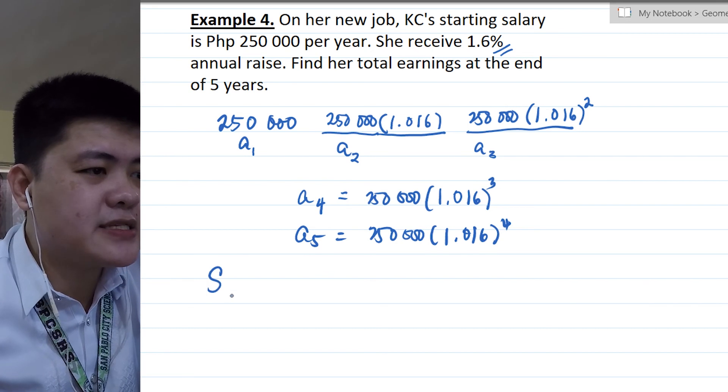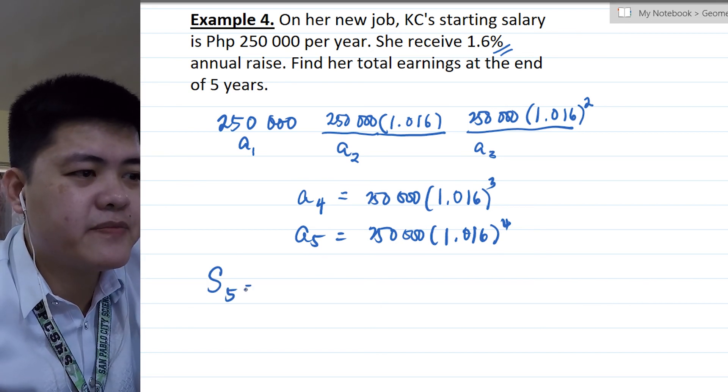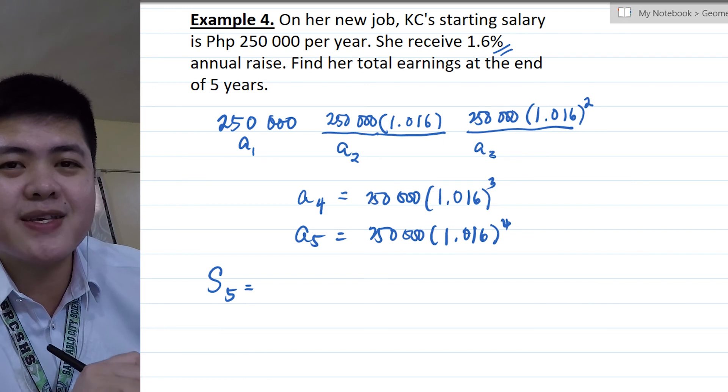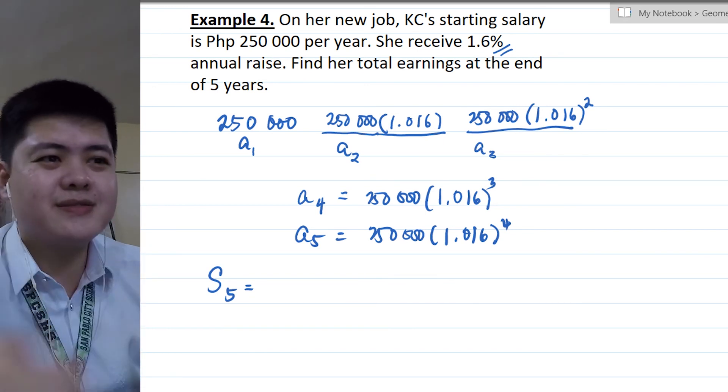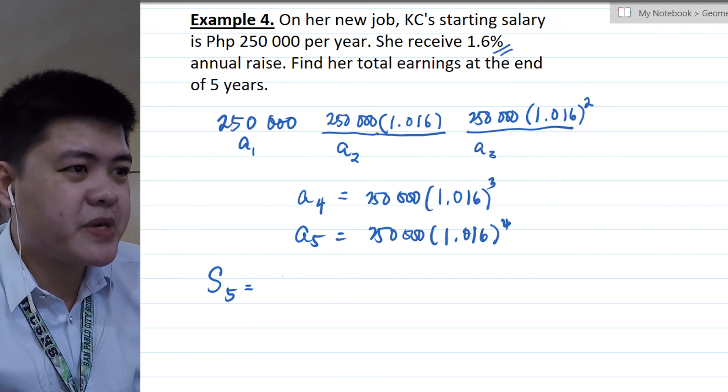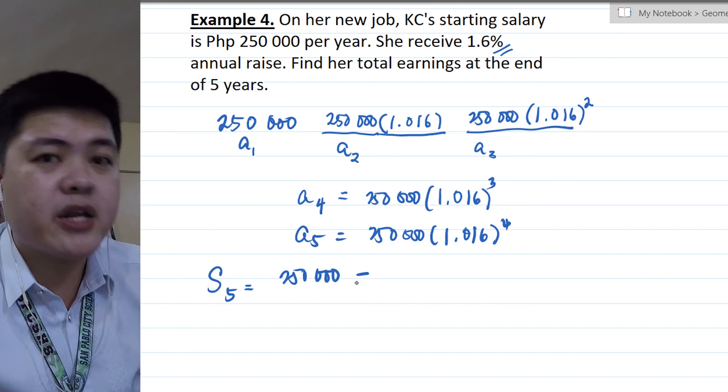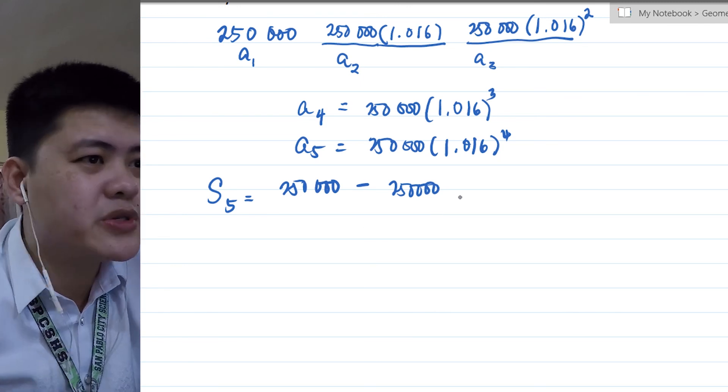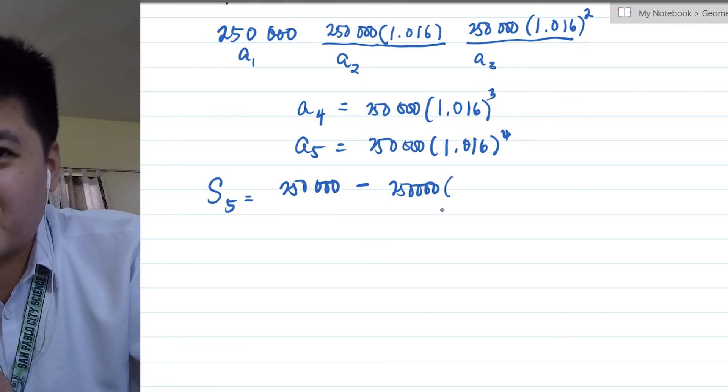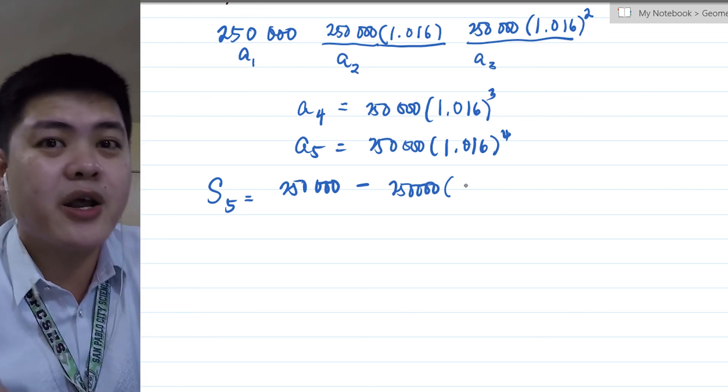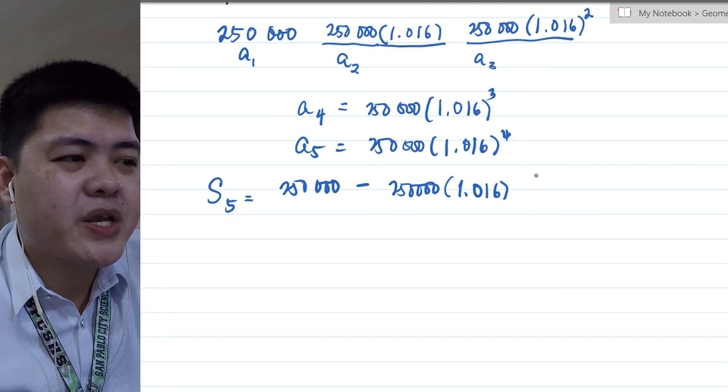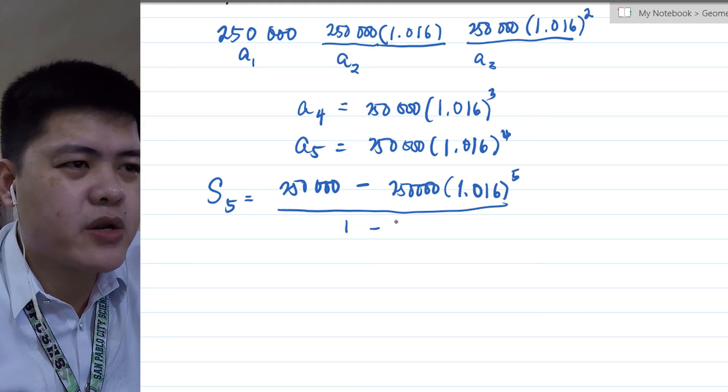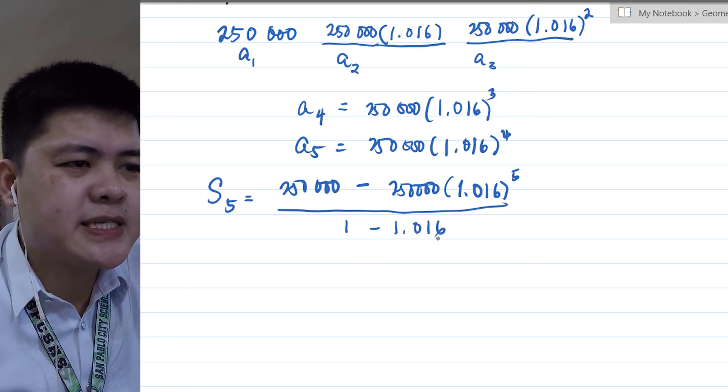So we need S sub 5. From the formula, if you're confused about the formula, you should write the formula for geometric series in your notebook so you don't have to keep looking. Okay? So S sub 5, we have first term, which is 250,000 minus 250,000. Common ratio is not 1.6%, rather it's 1.016, raised to 5, divided by 1 minus r, which is 1 minus 1.016.